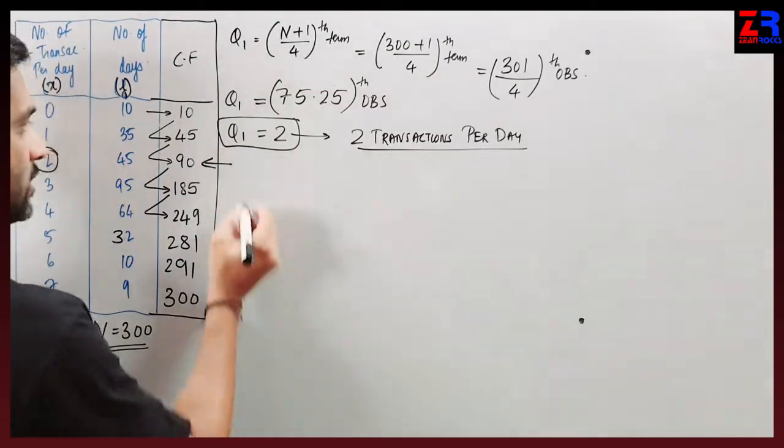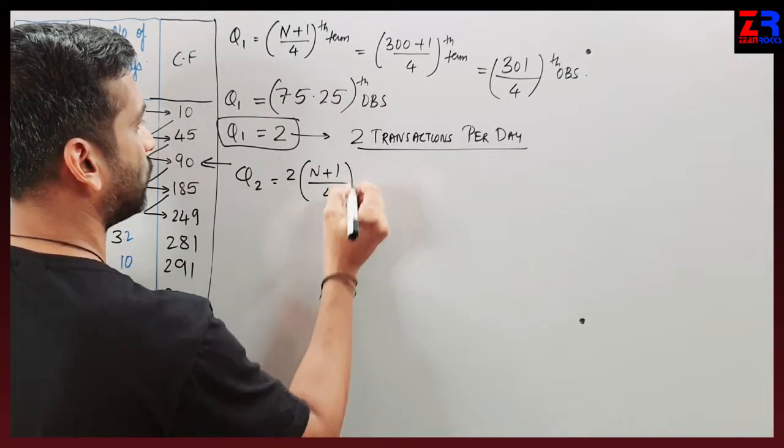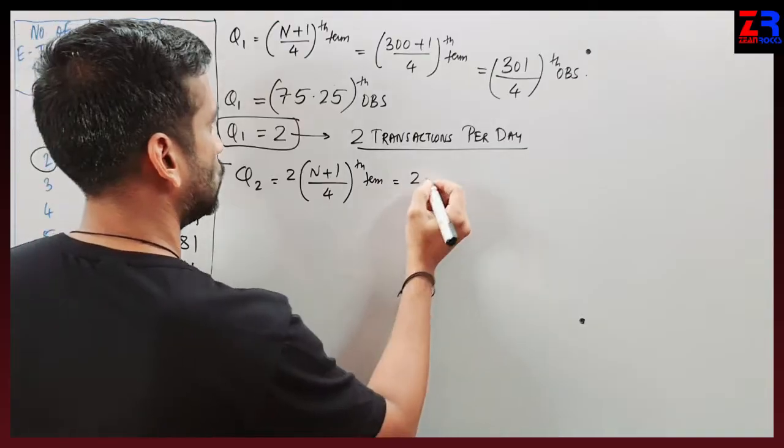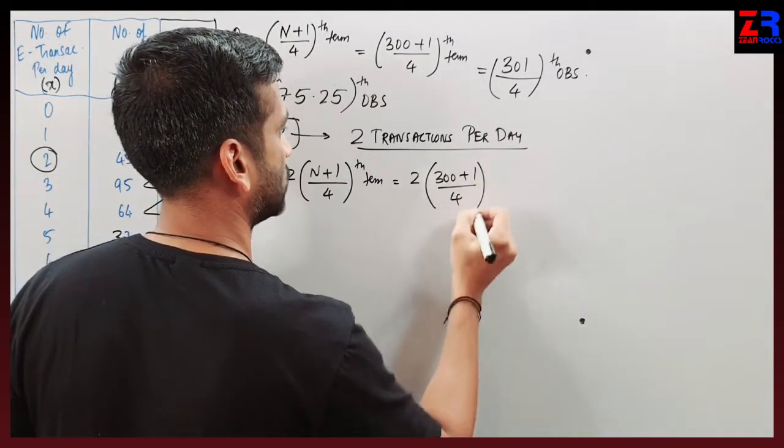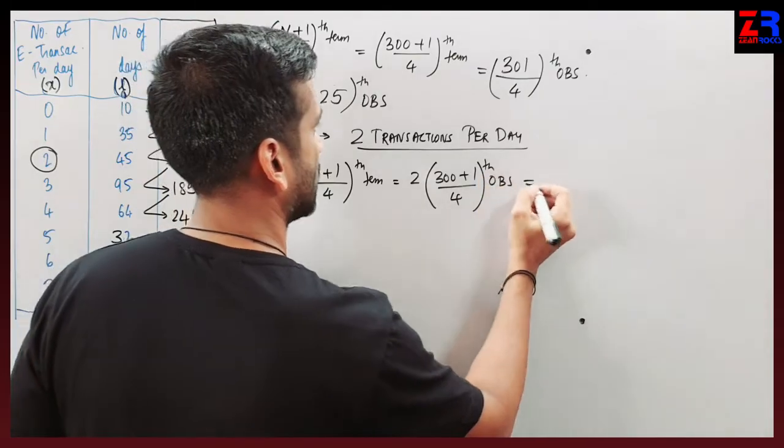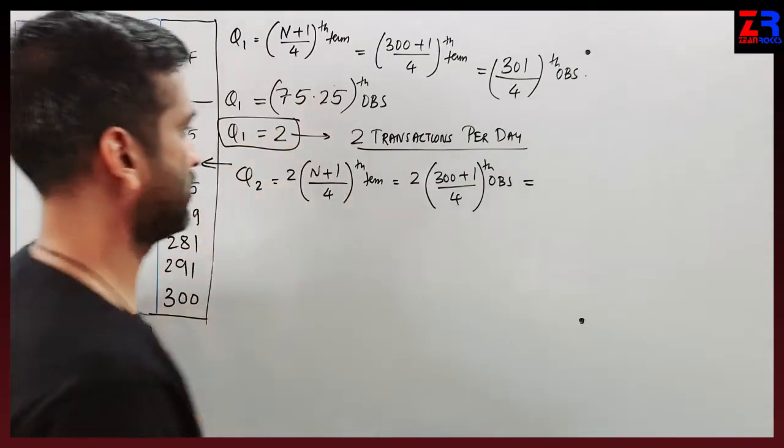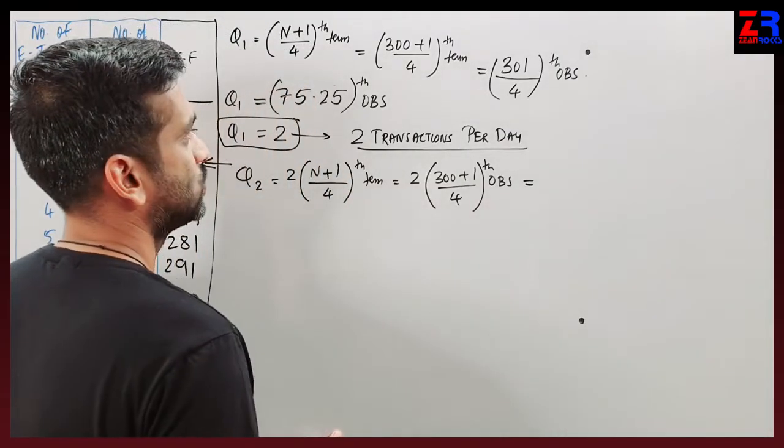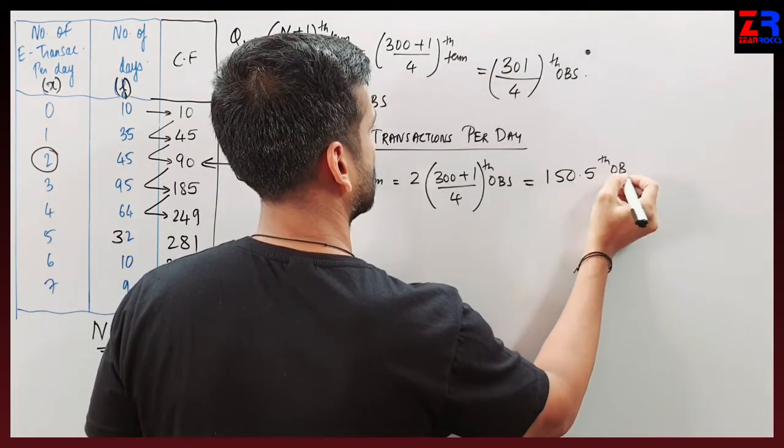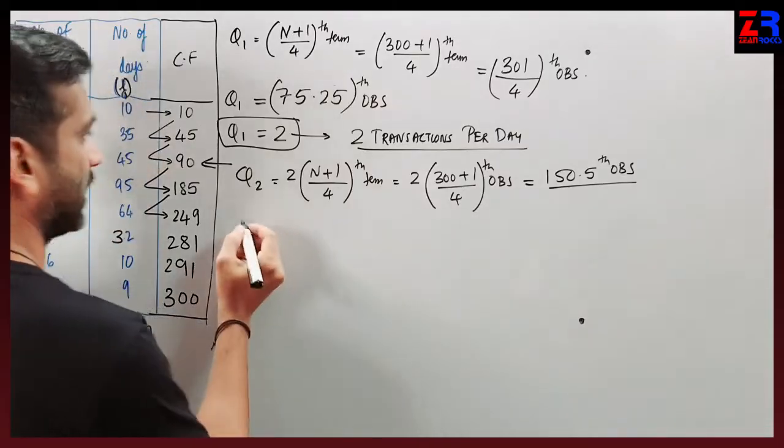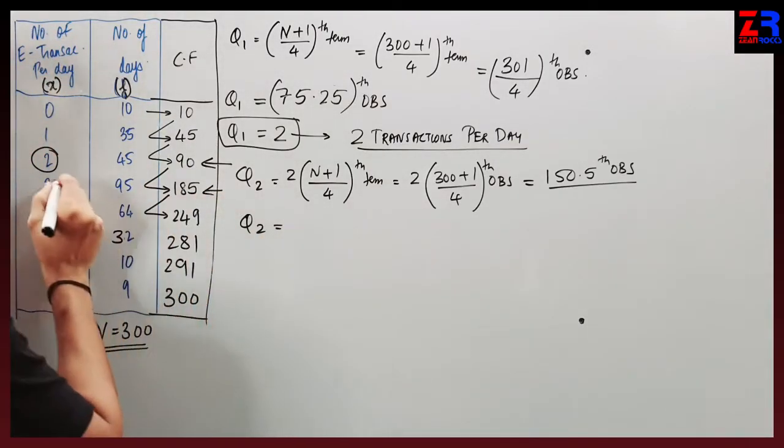Quartile 2 is 2(N+1) divided by 4th term, which gives 150.5th observation. 150.5 falls at 90 in the CF column, so Q2 is 3 transactions per day.